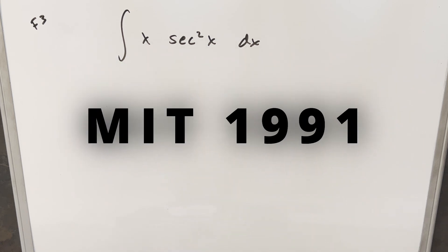Okay, we have here today another integral from the MIT integration B from 1991. This was finals number three. We have the integral of x secant squared x dx.